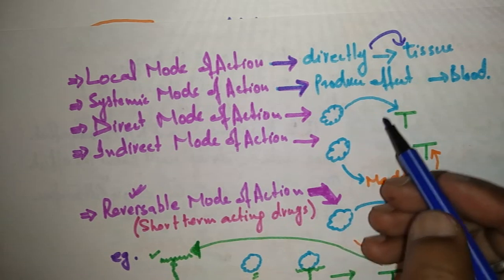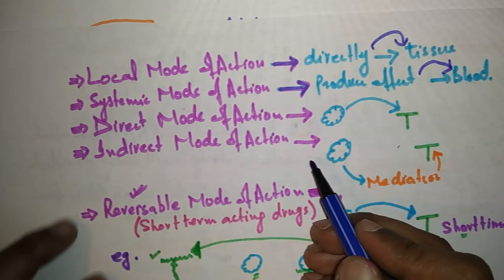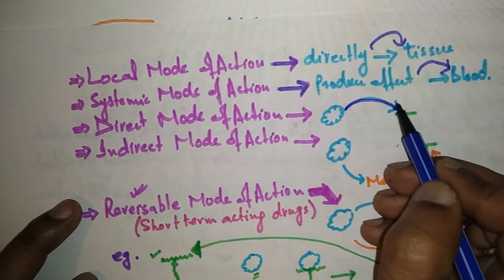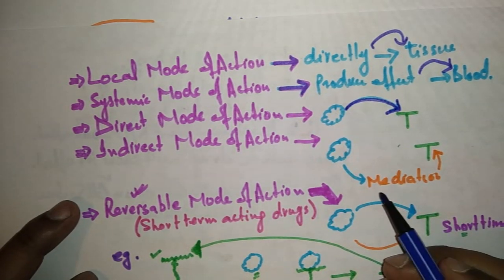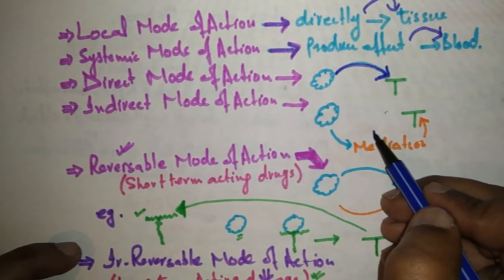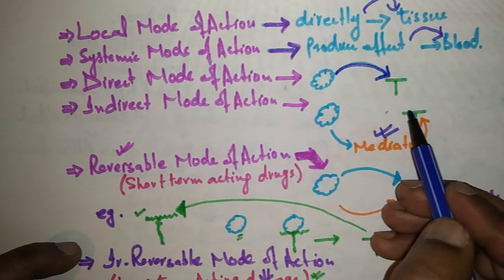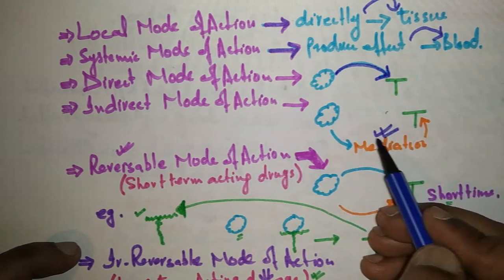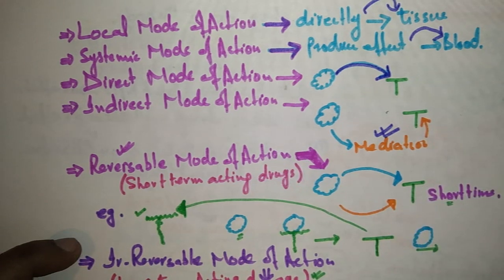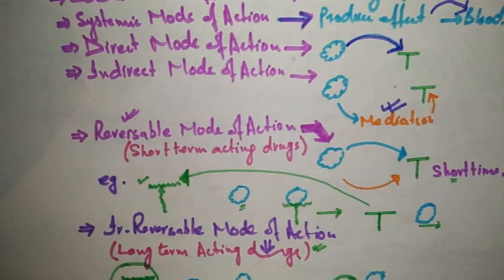We have systemic mode of action, where the drug produces its effect with the help of blood. Then we have direct mode of action, meaning the drug directly affects the receptor without any help. Indirect mode of action means the drug will affect the receptor with the help of a mediator — the drug does not go to the receptor directly.